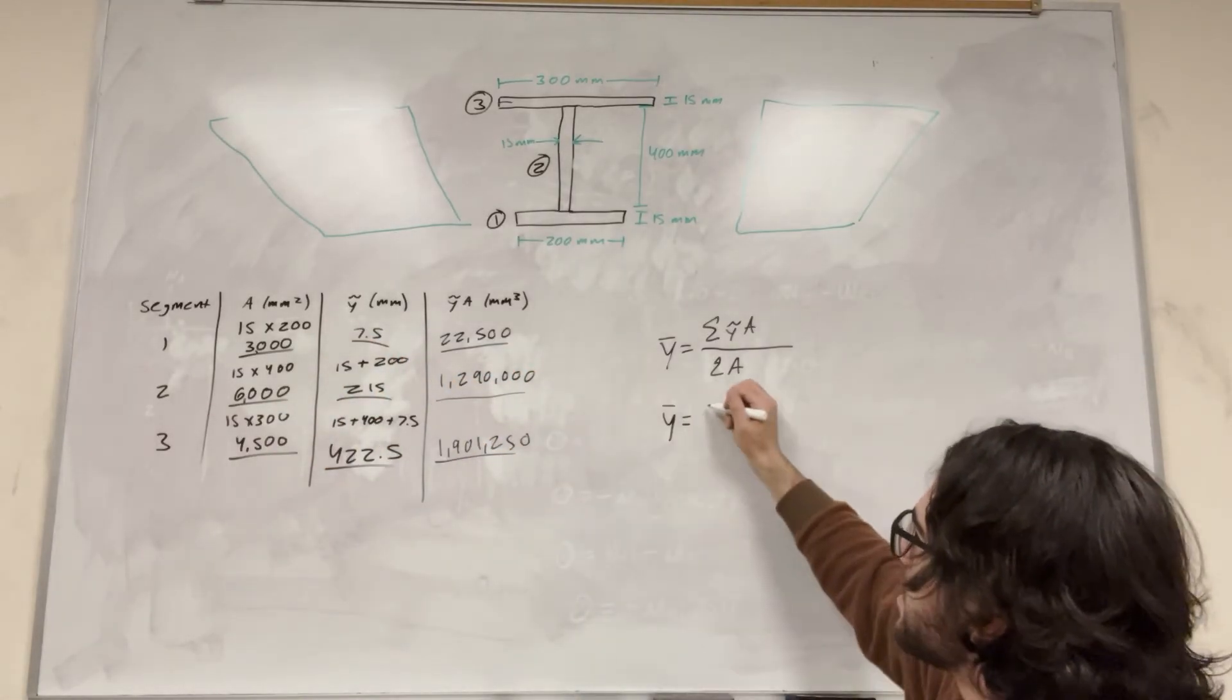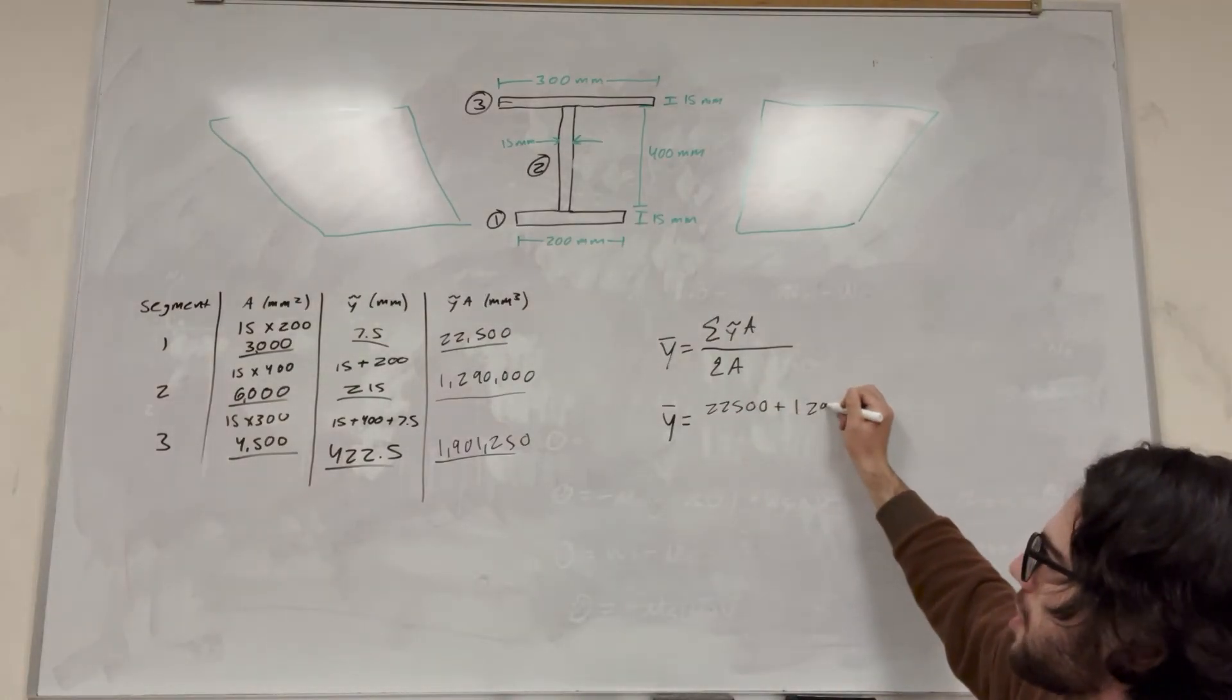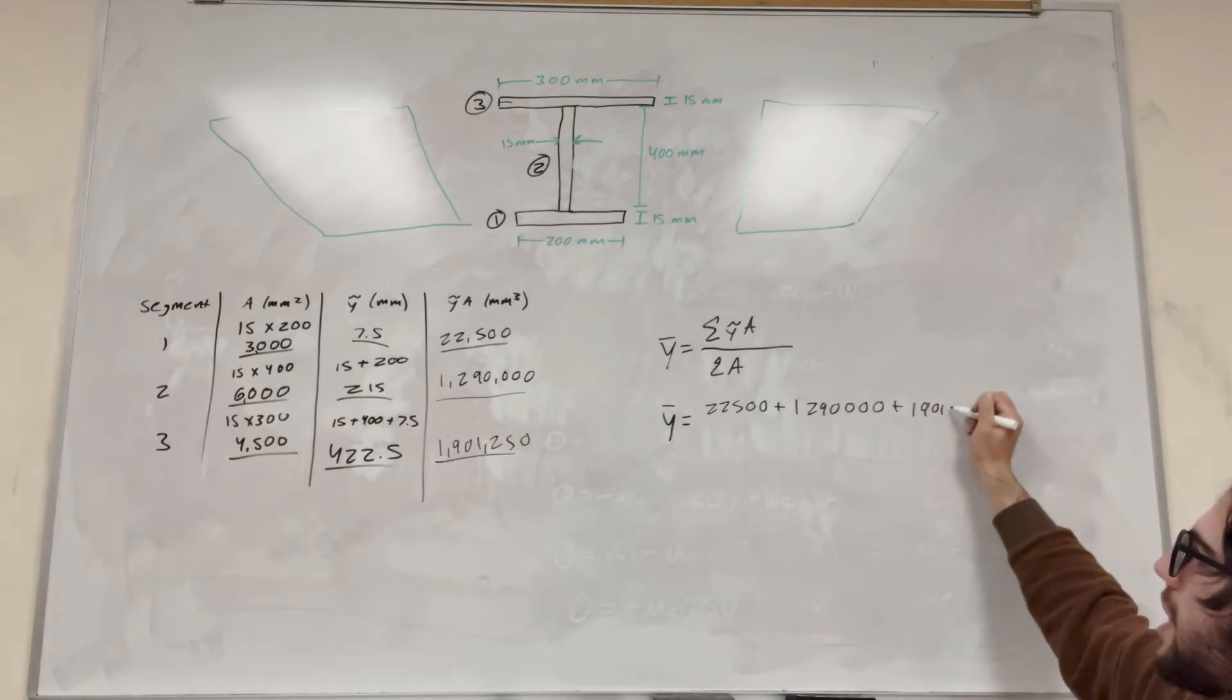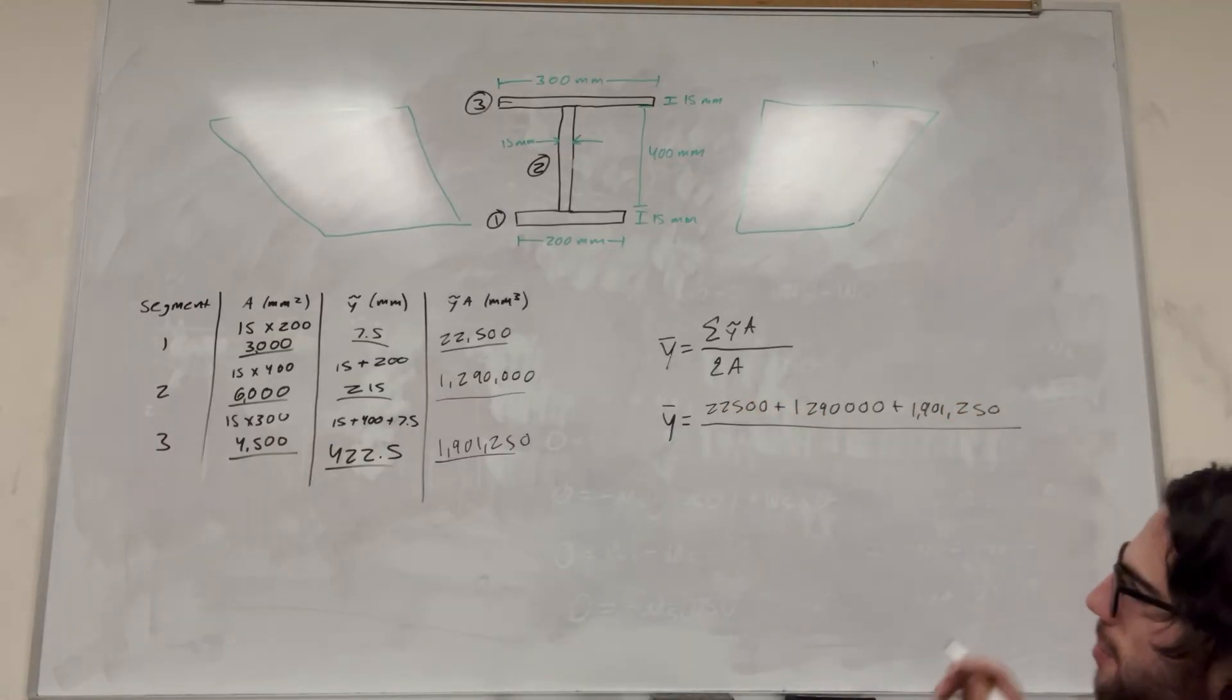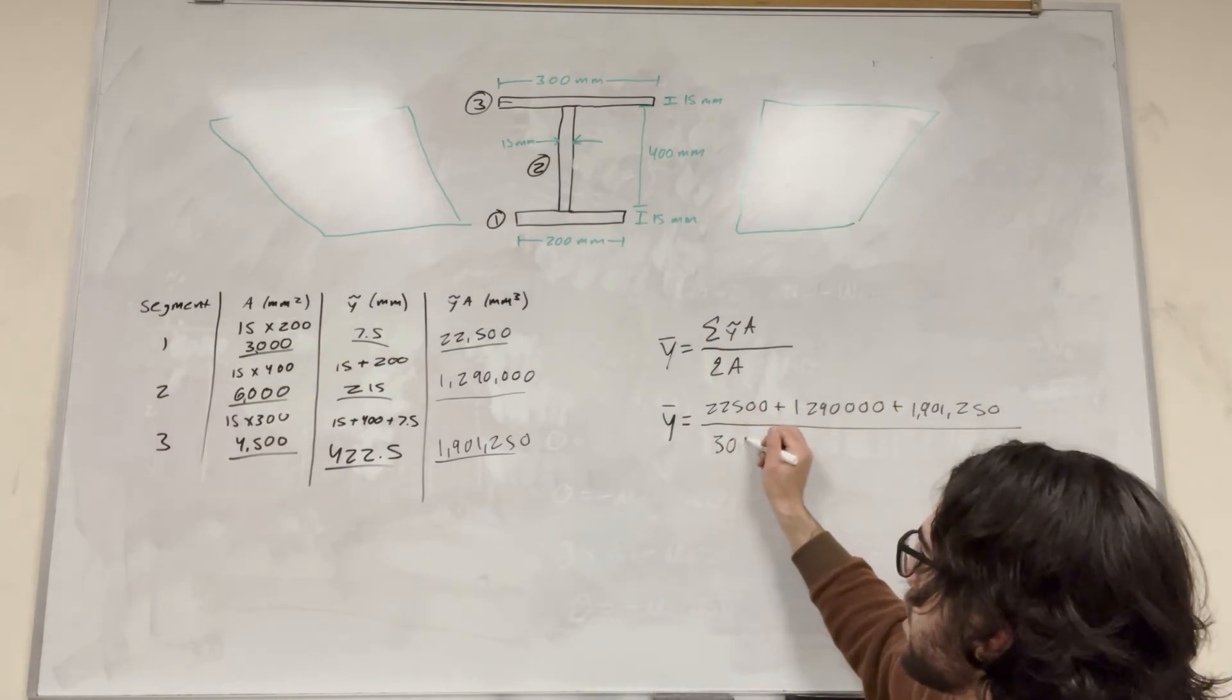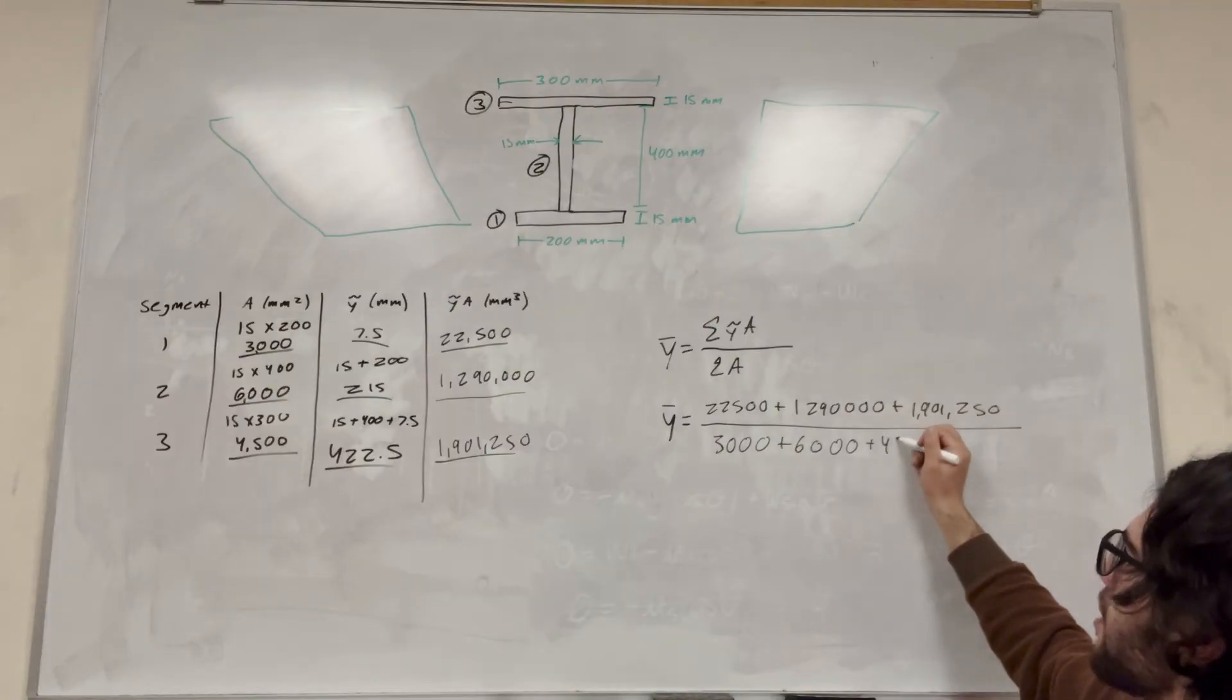So what's it going to look like? We're going to add 22,500 with 1,290,000 plus 1,900,000 and 1,250, right? Like that. And then on the bottom of the fraction, we're just going to add up our areas. This will be 3,000 plus 6,000 plus 4,500.